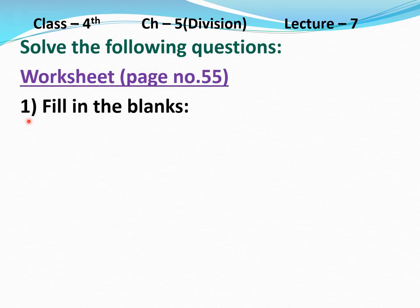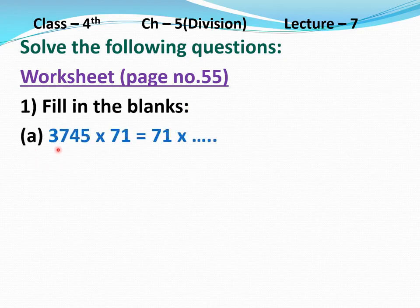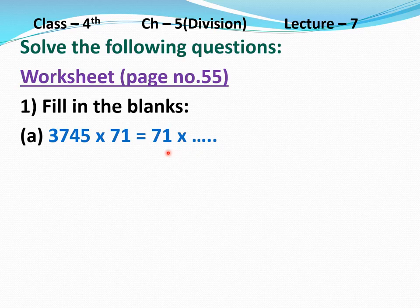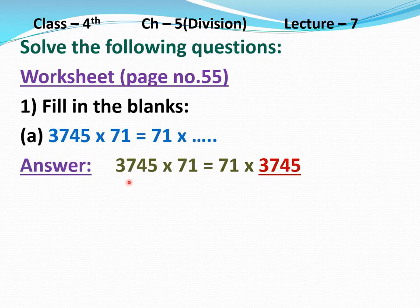Question number 1, fill in the blanks. Part A: 3745 multiply 71 equal to 71 multiply dash. This is the property of multiplication. The number left is 3745. Answer: 3745 multiply 71 equal to 71 multiply 3745.